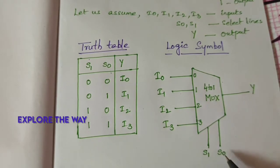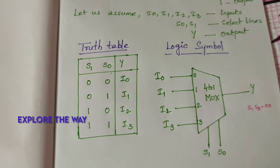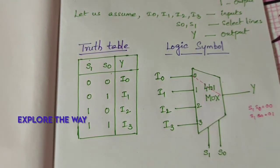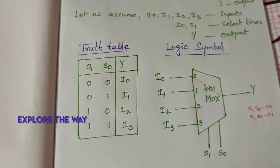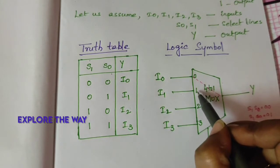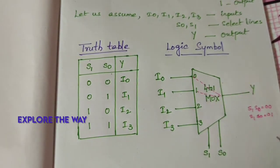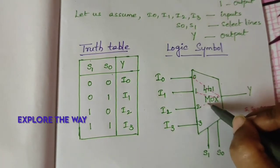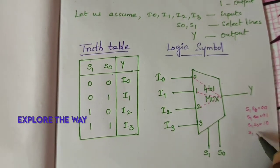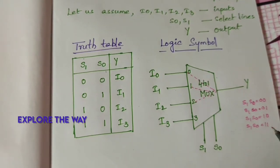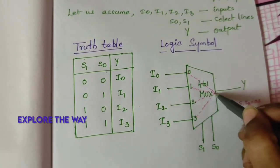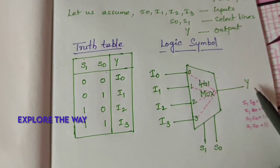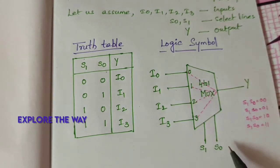When S1 and S0 are 0, 0, the decimal equivalent is 0, so the 0th line I0 is routed to the output. When S1, S0 is 0, 1, the decimal equivalent is 1, so line 1 is routed to output. When S1, S0 is 1, 0, decimal equivalent is 2, so line 2 is routed. When S1, S0 is 1, 1, decimal equivalent is 3, so line 3 is routed to the output.